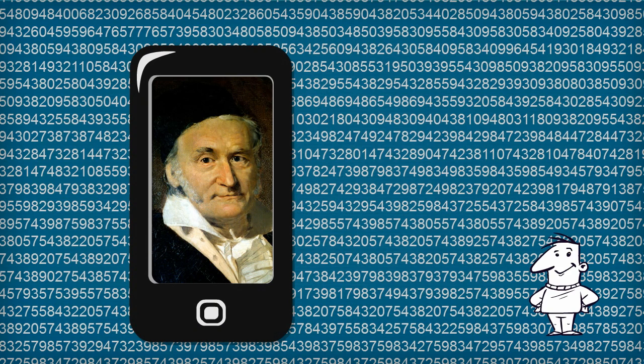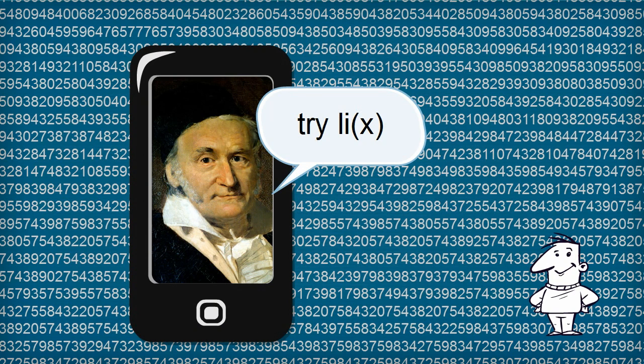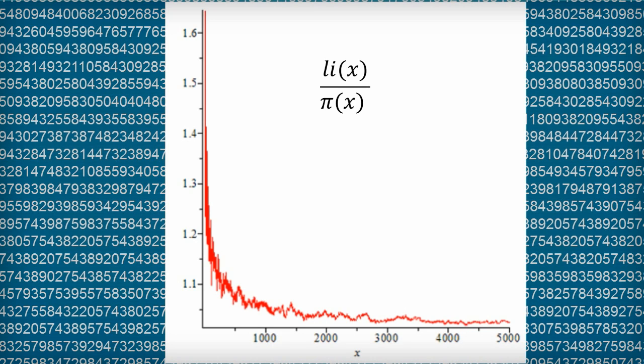He suggested that a function, which we now call li(x), would be a good approximation to π(x). This is what it looks like when we put li(x) divided by π(x). It looks like Gauss has hit the jackpot. And remember, Gauss didn't have computers. li(x) works very well. As x gets larger and larger, the ratio of li(x) to π(x) seems to get closer and closer to 1.